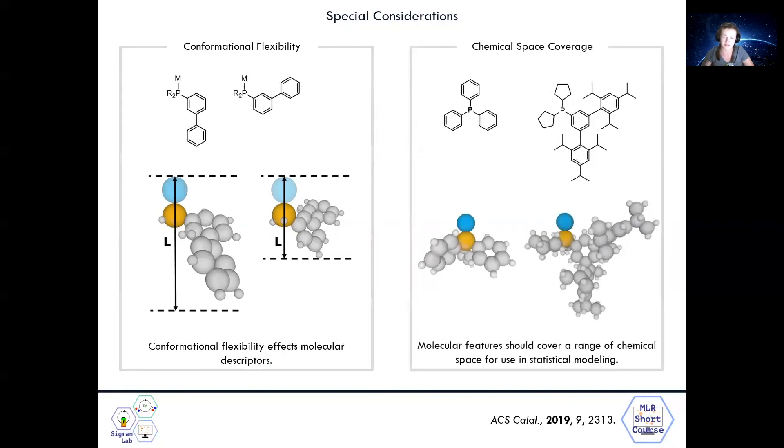Additionally, statistical modeling is only able to pick up structural properties dictating reaction outcomes if the dataset contains a range of chemical structures. For instance, if phosphine distal steric bulk is important in driving a reaction, the dataset should contain phosphines with both small and large distal steric profiles to enable modeling workflows to capture such effects.